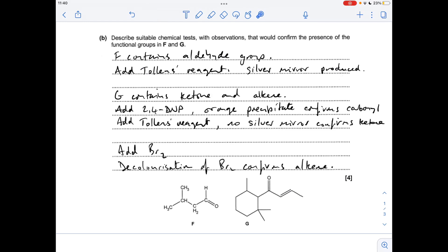For compound G, we've got two functional groups, the ketone and the alkene. Starting with ketone, the first thing you need to do is confirm it's a carbonyl, so you'd add 2,4-DNP, orange precipitate confirms carbonyl, but then you'd need to rule out that it's not an aldehyde. So you'd add Tollens reagent and you would not expect to see a silver mirror. So if it's not an aldehyde, it's therefore a ketone.